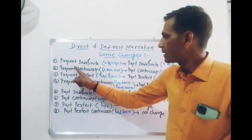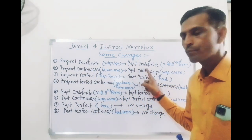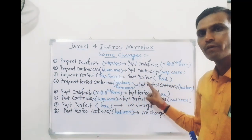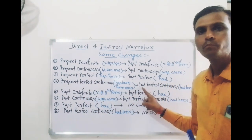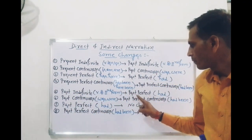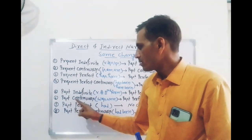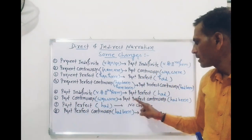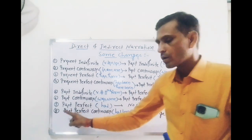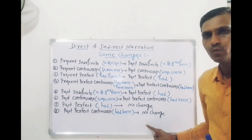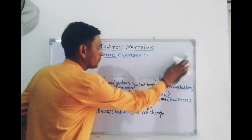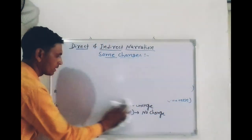फिर से एक बार देखते हैं: Present Indefinite → Past Indefinite, Present Continuous → Past Continuous, Present Perfect → Past Perfect, Present Perfect Continuous → Past Perfect Continuous, Past Indefinite → Past Perfect, Past Continuous → Past Perfect Continuous, Past Perfect → No Change, Past Perfect Continuous → No Change। तो दोस्तों, आशा है ये 8 tenses आपको समझ में आ गए होंगे।